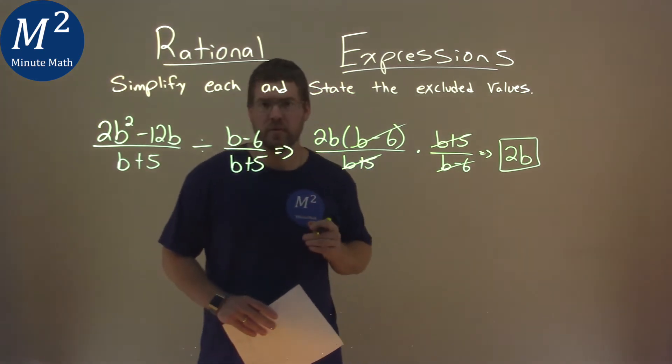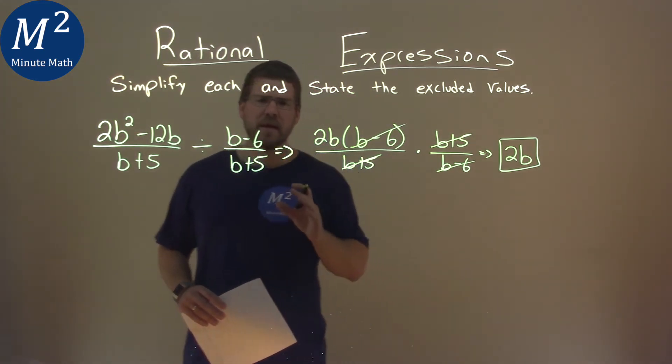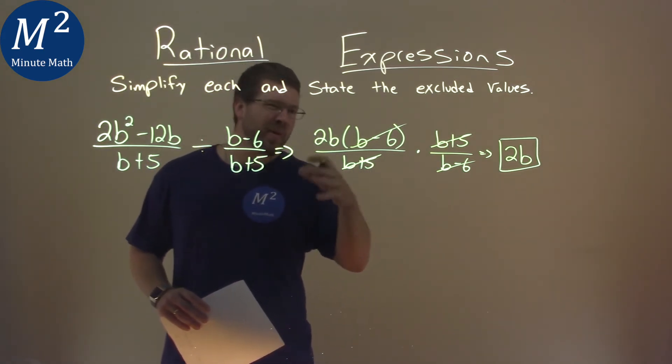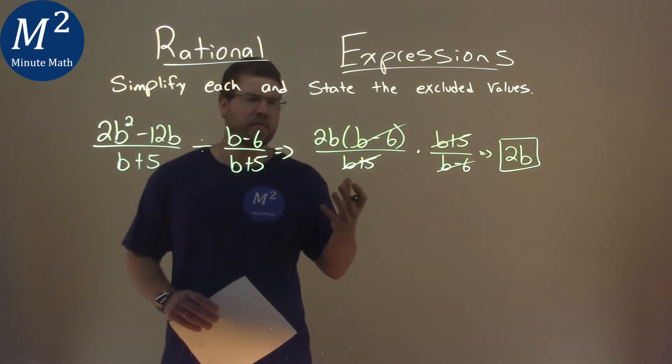We need to find the excluded values as well. So with rational expressions, the excluded values are the ones that, when the denominator is equal to 0, because we can't divide by 0.